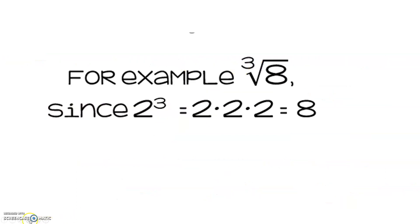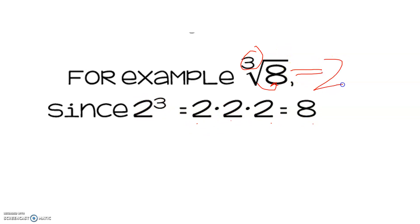Alright, for example, let's talk about this one. If we take the cube root of 8, what we're asking is: what number did I multiply by itself 3 times to get 8? Since 2 cubed — 2 times 2 times 2 — is 8, the cube root of 8 is going to equal 2. It's trying to figure out what number you multiplied by itself the number of times that the index says.